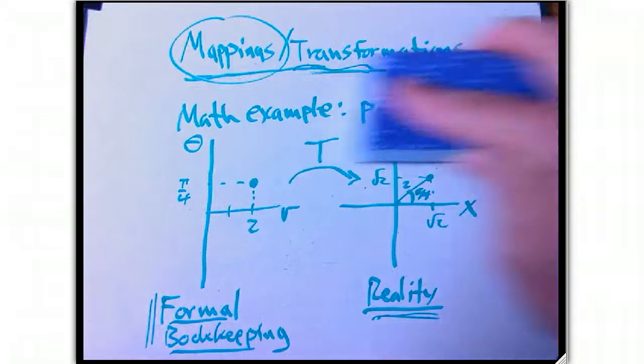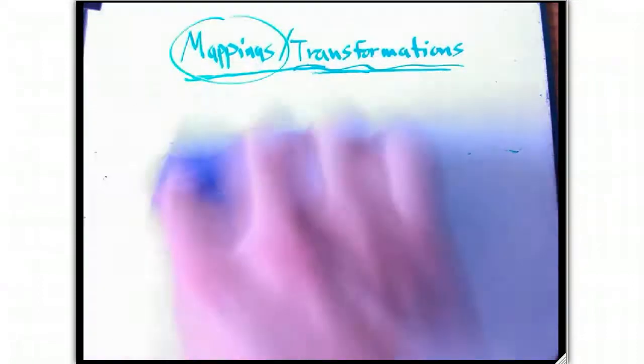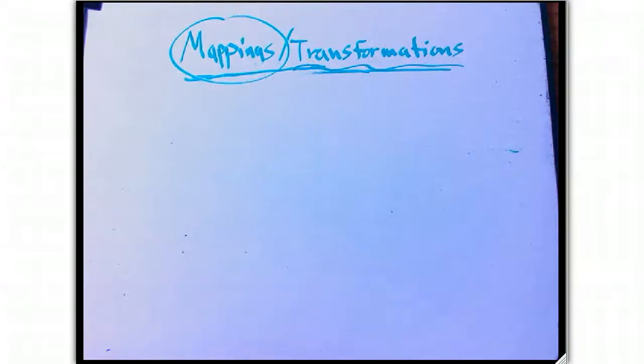So those are two examples where you've got sort of a formal thing like a map, a paper map, or the polar coordinates r theta, and reality. That's one use of this mapping idea.